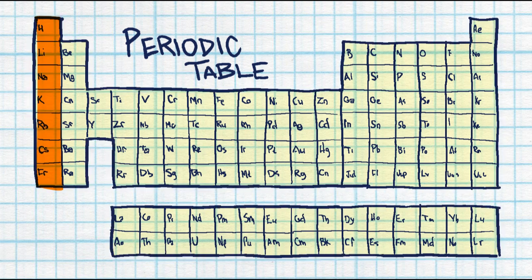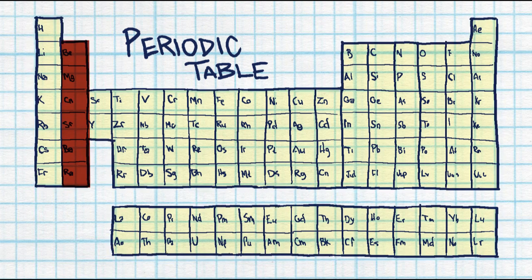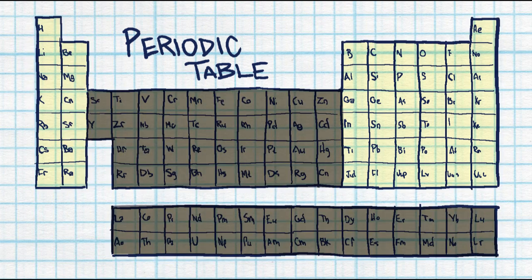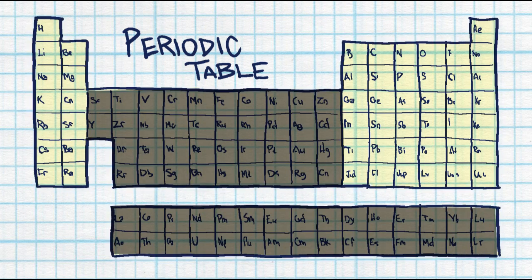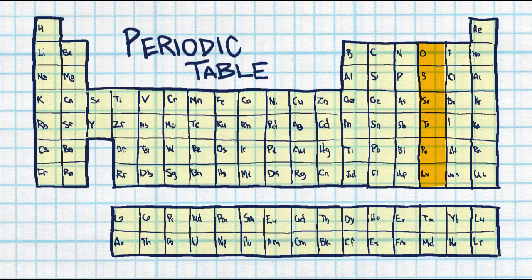Once in group 1, you're going to have one valence electron. Group 2 will have two valence electrons. You skip over the middle section, and starting in group 13, they're going to have 3, 4, 5, and so on.